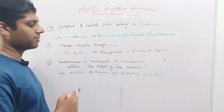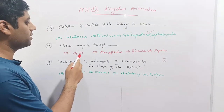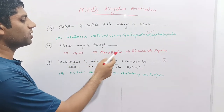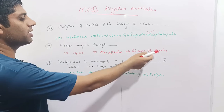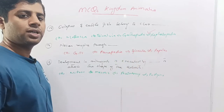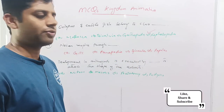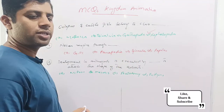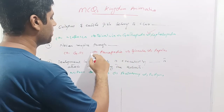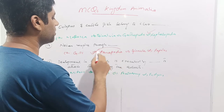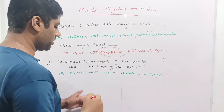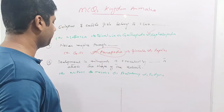Next: Nereis respires through what? Given options are gills, parapodia, spiracles, and papulae. All of these are respiratory organs of different phyla. However, Nereis respires through parapodia, so the option parapodia is correct.